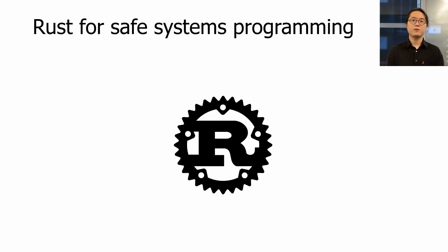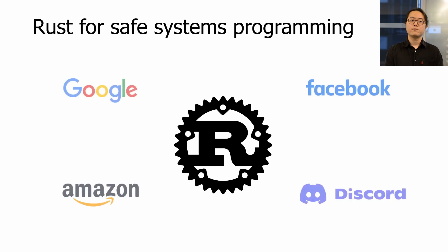Preventing memory safety bugs is critical to the security of system software. Recently, Rust's programming language is gaining popularity in systems programming because it promises memory safety without costly runtime checks such as garbage collection. Therefore, many large companies have already started adopting Rust in their production code.